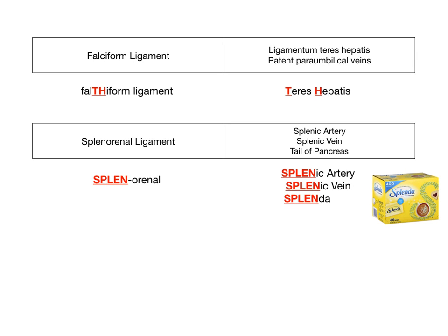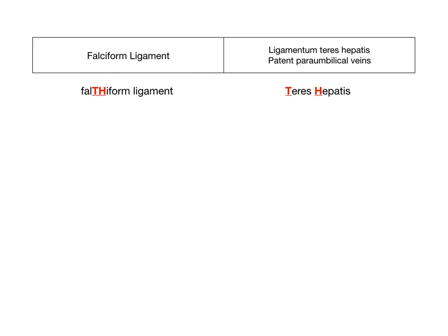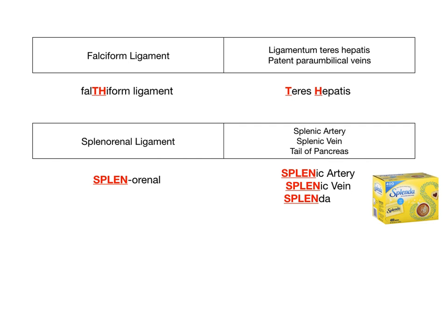I don't have great mnemonics for the other four ligaments, but if you know these two you're in good shape. For gastrohepatic, gastrocolic, and gastrosplenic, the names tell you where they run — gastric area to hepatic area, etc. — so you can infer what's involved. Splenorenal and falciform are more challenging, so remember: falciform → TH for teres hepatis; splenorenal → splenic artery, splenic vein, and Splenda for pancreatic tail because pancreas relates to diabetes.